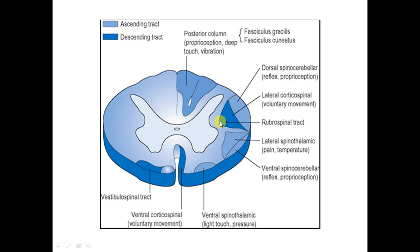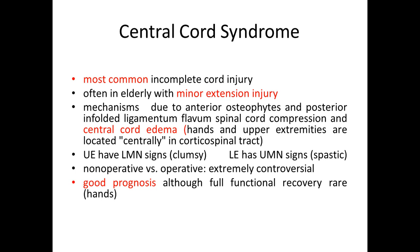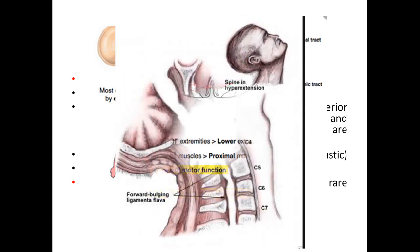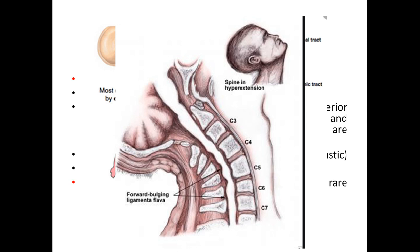The motor fiber arrangement in the spinal cord places upper limb fibers toward the center and lower limb fibers toward the periphery. Therefore, a central lesion affects the upper limb more than the lower limb. Central cord syndrome is the most common incomplete spinal cord lesion seen in clinical practice. It results from hyperextension injury, typically occurring in an elderly patient who falls while standing and sustains a hyperextension injury in an already stenotic spinal canal.